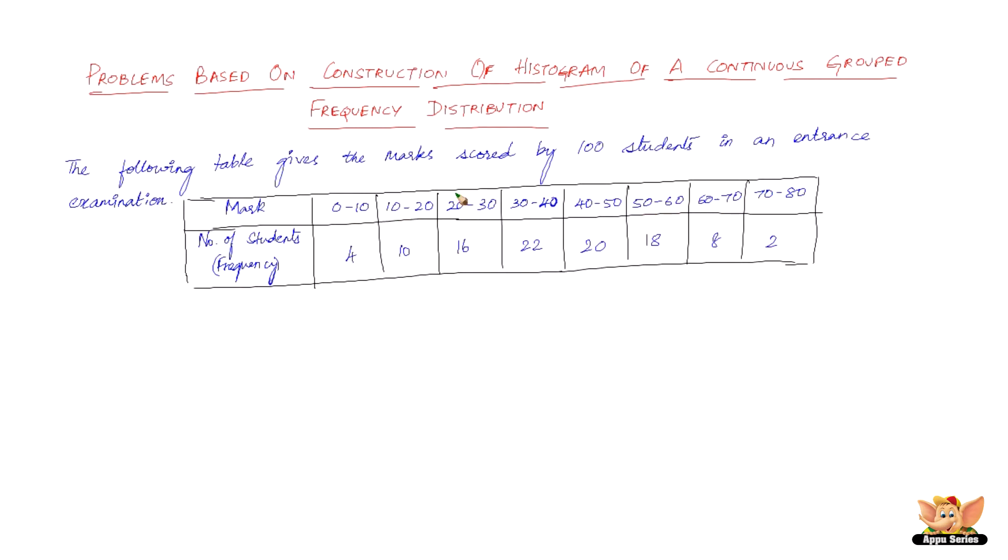Now, we need to represent this data in the form of a histogram. And this data is of a continuous grouped frequency distribution.